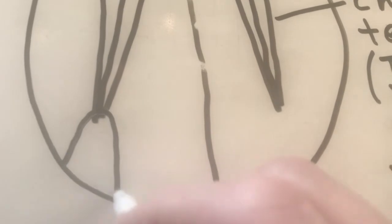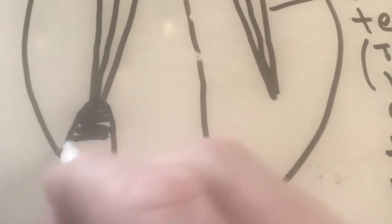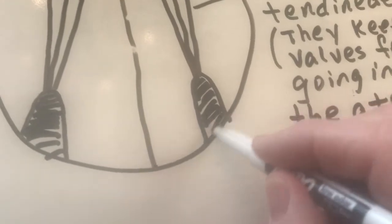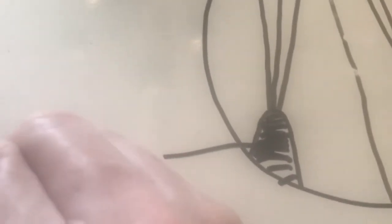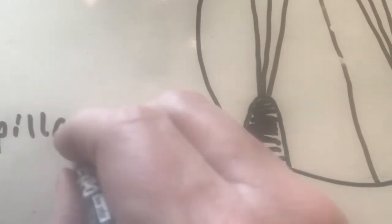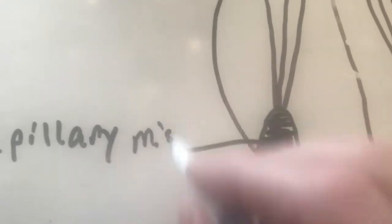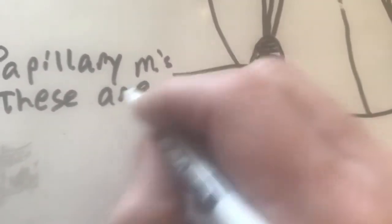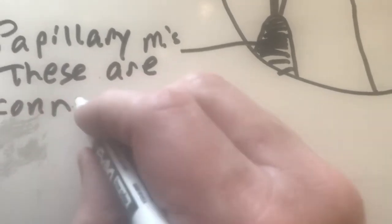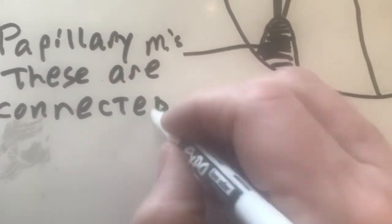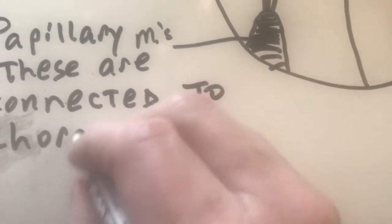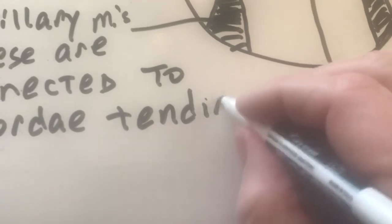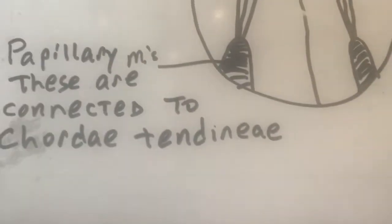Now, the chordae tendinea are attached to thin muscles called papillary muscles. Okay, and basically these hold on to the chordae tendinea.